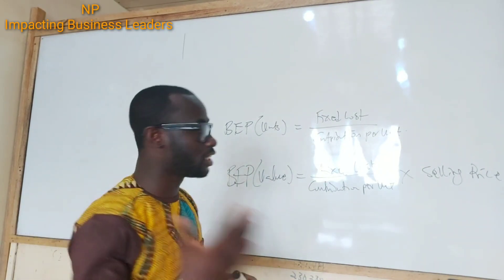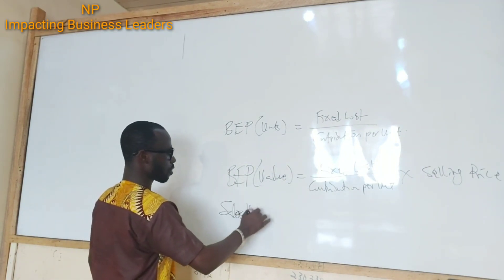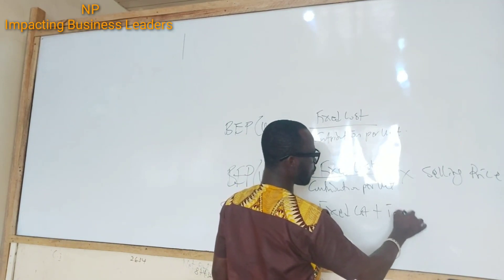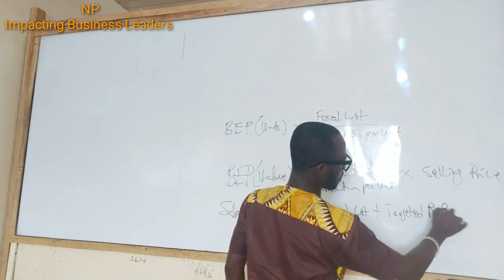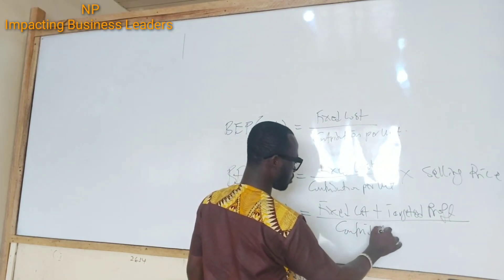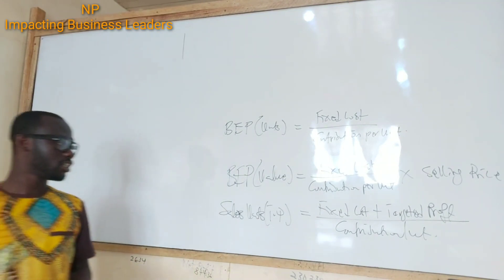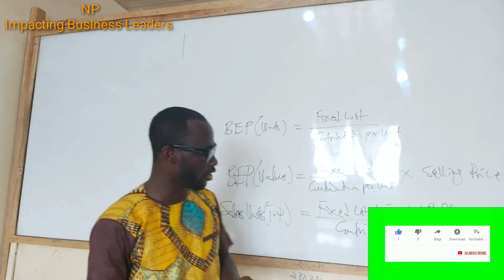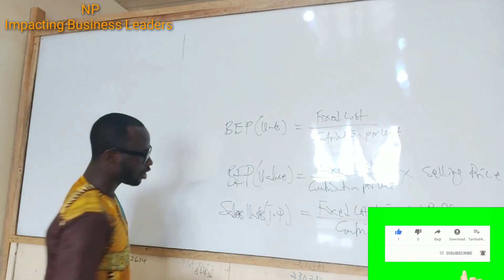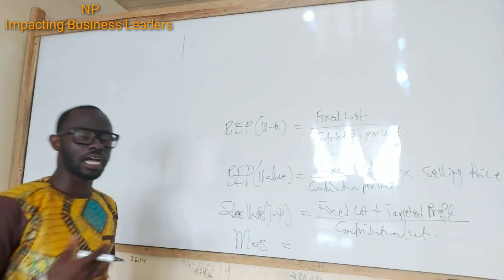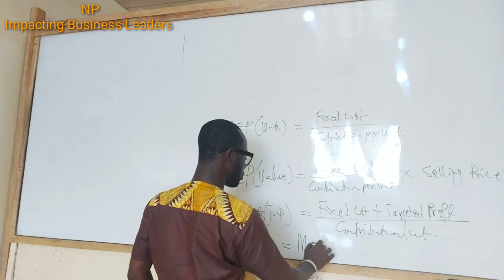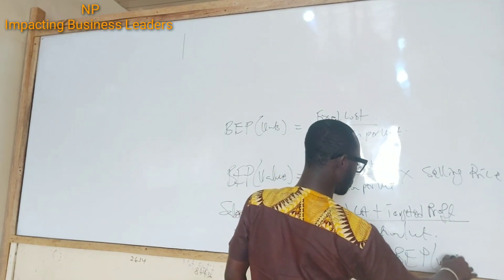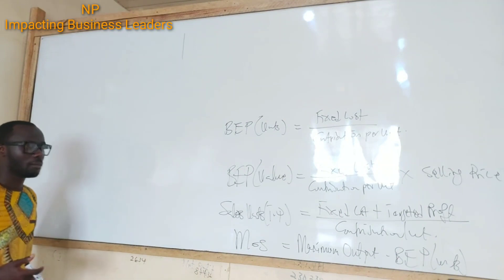Sales units for a targeted profit is fixed cost plus your target profit, divided by contribution per unit. Then the last one is the margin of safety, which is the maximum output minus the break-even point in units.